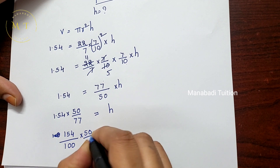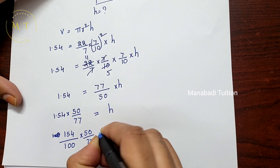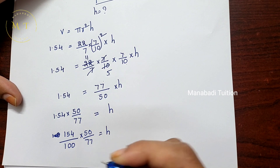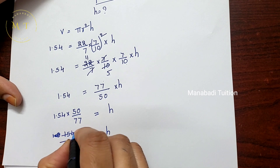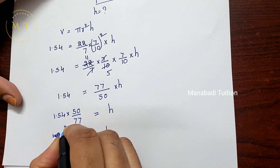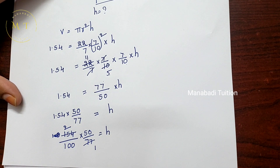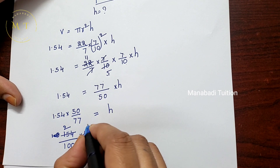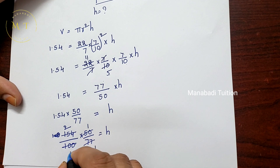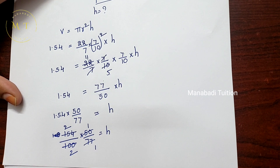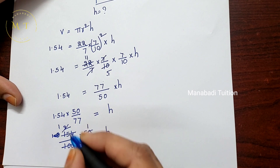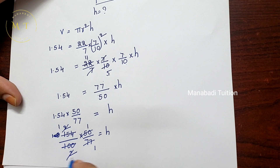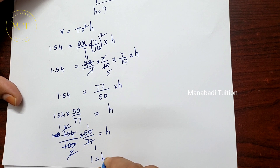Continuing the calculation: 1.54 × 50/77 = h. Cancelling: 77 goes into 154 twice, giving 2; 50 and 2 cancel further. Total h value equals 1.